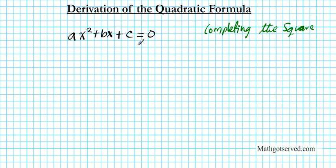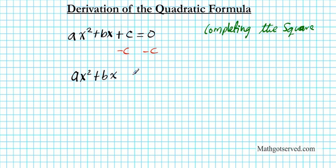When you are completing the square, first thing you want to do is make a term that creates a perfect square trinomial. What I am going to do first is toss the c over. So subtract c from both sides and we are going to have the equation ax squared plus bx equals negative c.